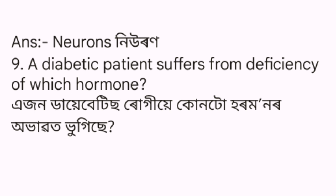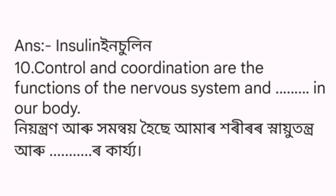Question 9: Nerve tissue is made up of which hormone? The answer is insulin. Question 10: Control and coordination are the functions of the nervous system and endocrine system in our body.